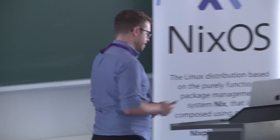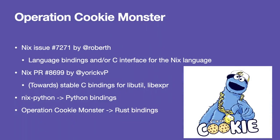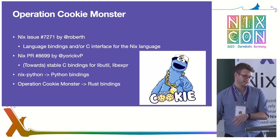Which brings us to Operation Cookie Monster. Yesterday, Yorick talked about a C API, and basically I went ham on it with Rust. He talked about Python bindings that bind to this API so you can use Nix from Python. Operation Cookie Monster can be thought of as the Rust equivalent — if somebody didn't know what they were doing, didn't talk to anybody about it, and did it in a weekend.